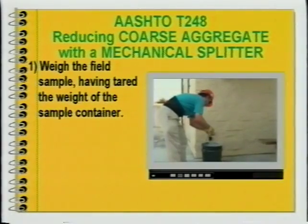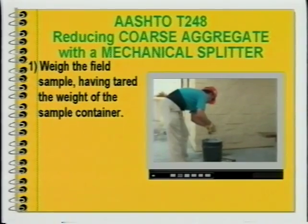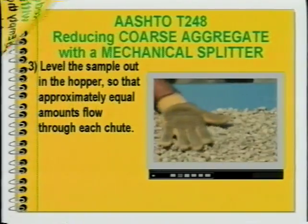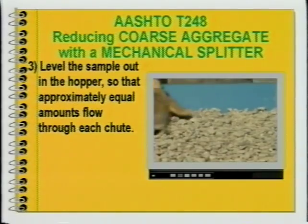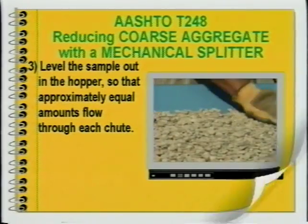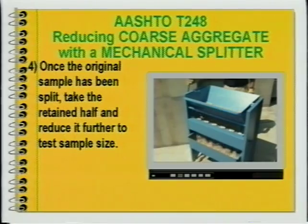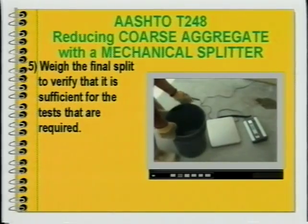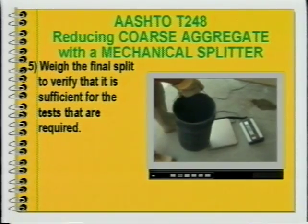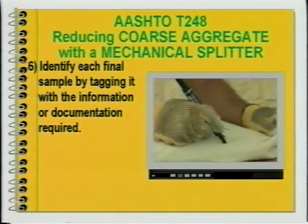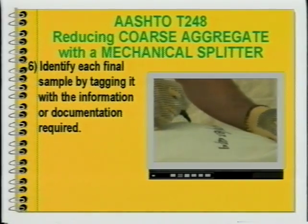Let's review the procedures for coarse aggregate sample reduction using a mechanical splitter: 1. Begin by weighing the field sample, having tared the weight of the sample containers. 2. Empty the sample containers into the hopper of the splitter. 3. Level the sample out in the hopper so that approximately equal amounts flow through each shoot. 4. Once the original sample has been split, take the retained half and reduce it further to test sample size. 5. The final split for testing should then be weighed to verify that it is sufficient for the tests required. 6. Identify each final sample by tagging it with the information or documentation required.